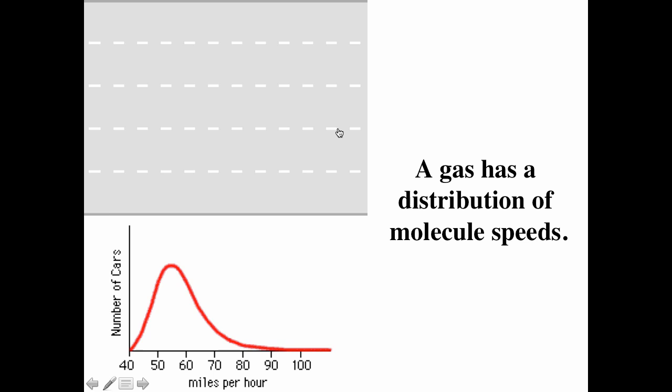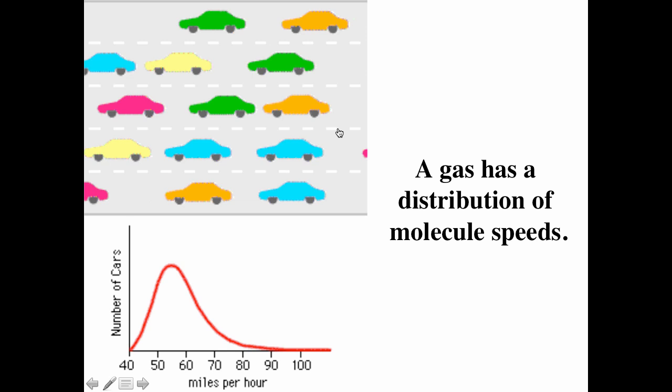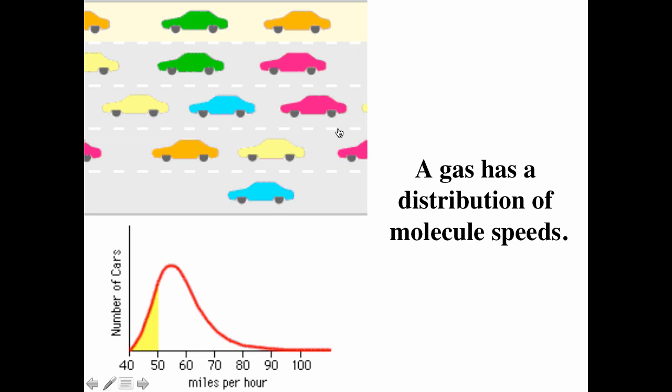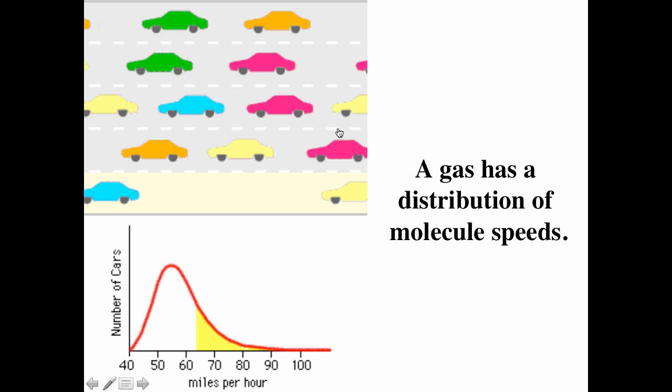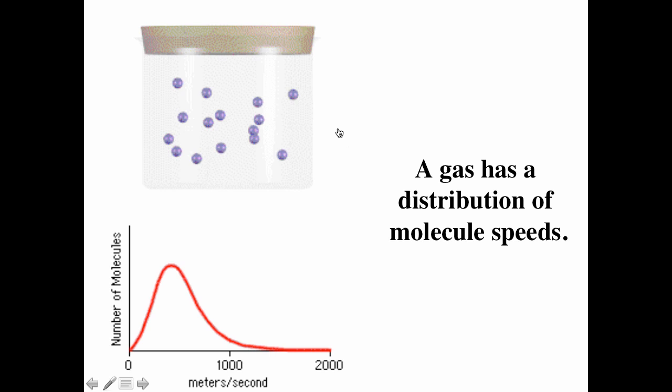If you look at a gas, you're going to have a distribution of speeds — kind of like a distribution of speeds on a freeway. Cars on highways travel at a variety of speeds. To show the distribution of automobile speeds, we could plot the number of cars moving versus their velocities. Molecules in the gas phase show the same variability of speed. Plots of molecular speed distributions are called Boltzmann plots.